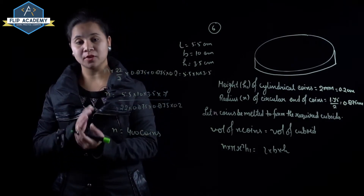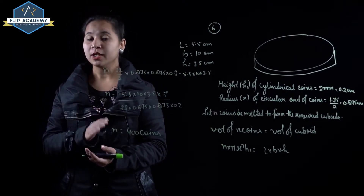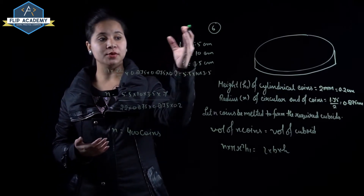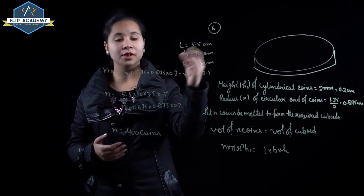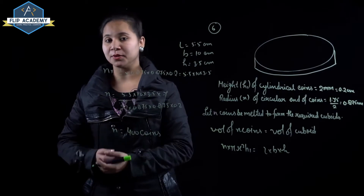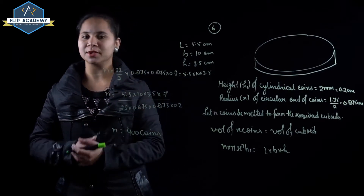There are 400 coins required to be melted to get a cuboid with l = 5.5 cm, b = 10 cm, h = 3.5 cm. Question number 6 is complete. Surface area and volume, exercise 13.3, question number 7.